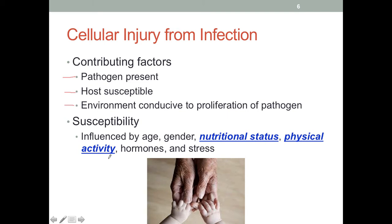On the other hand, if someone is malnourished, the person is more likely to develop not only infection but other diseases. This is why when we talk about malnutrition, we emphasize that malnutrition is associated with increased morbidity and mortality. As far as physical activity is concerned, this is a very hot area for research and public attention. Overall, studies indicate that if someone is regularly engaging in sport and physical activity, this person's immune system is stronger.